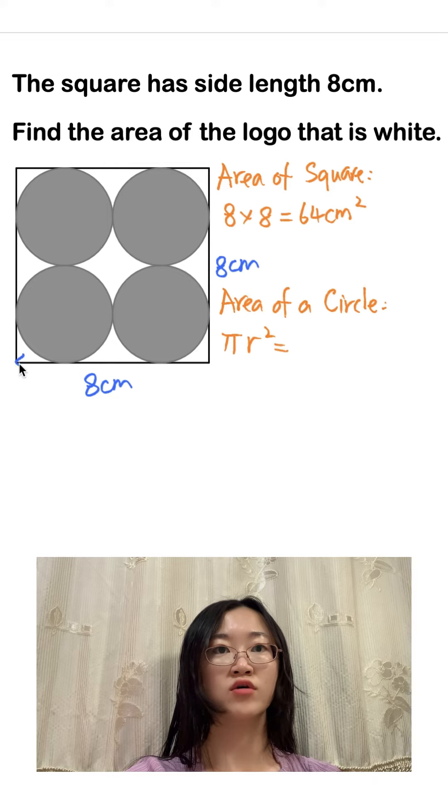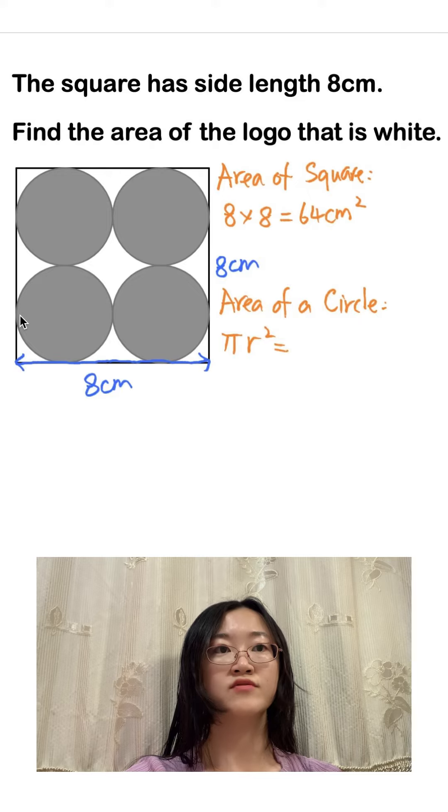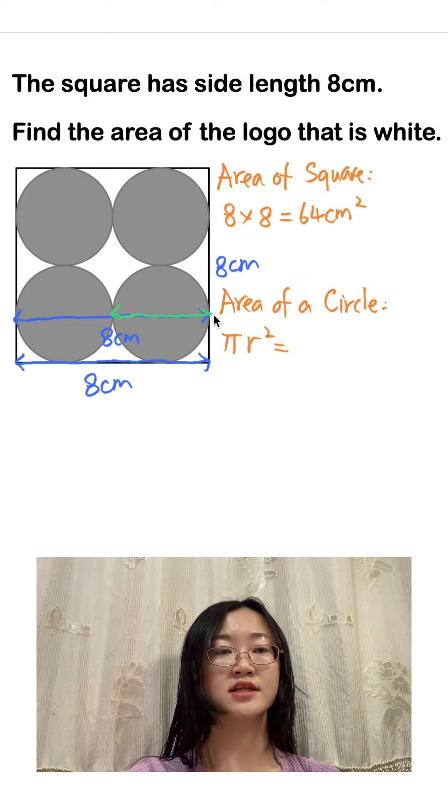What is the radius of the circle? We know that if this is eight centimeters then the entire length from there to there is also eight centimeters. So the diameter is half of eight centimeters, that is four centimeters, and the radius is half of a diameter, that is two centimeters.